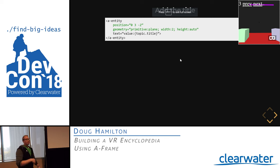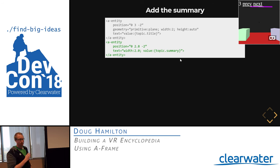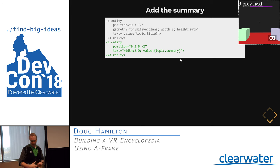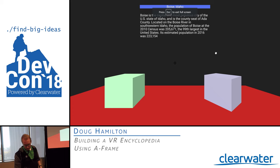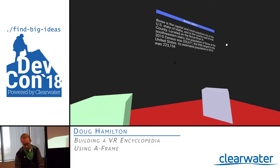Next, we bring in the summary paragraph. We add another entity with a position component set just 0.2 meters below our title. We add a text component with a width set to 2 meters, causing the text component to do word wrapping — without this, the string would go on forever into the distance. We set the value to the summary from our topic. Now we see 'Boise, Idaho' at the top and the summary string below it, wrapped at about 2 meters wide, which is the same width as our title.